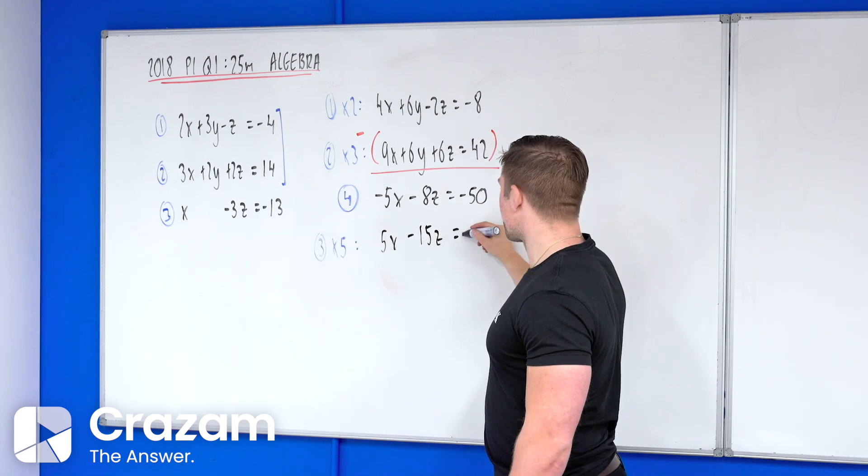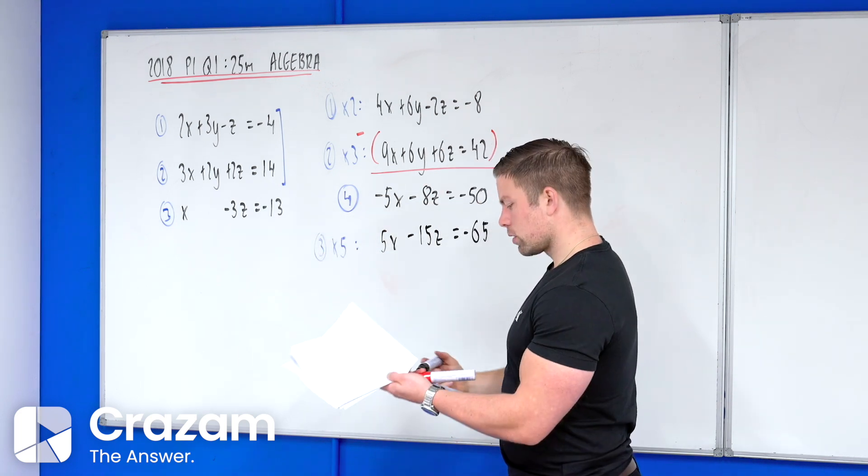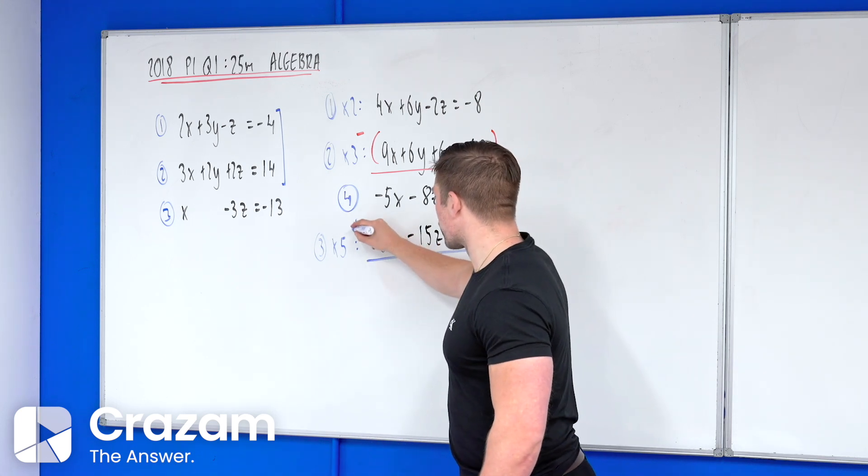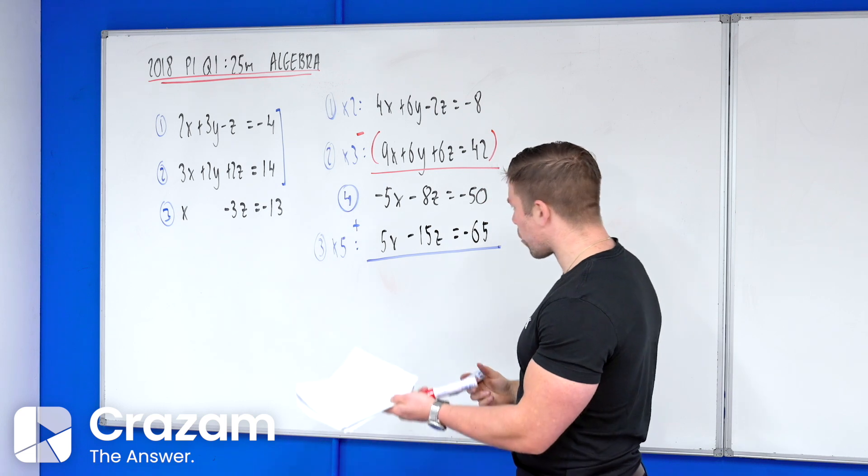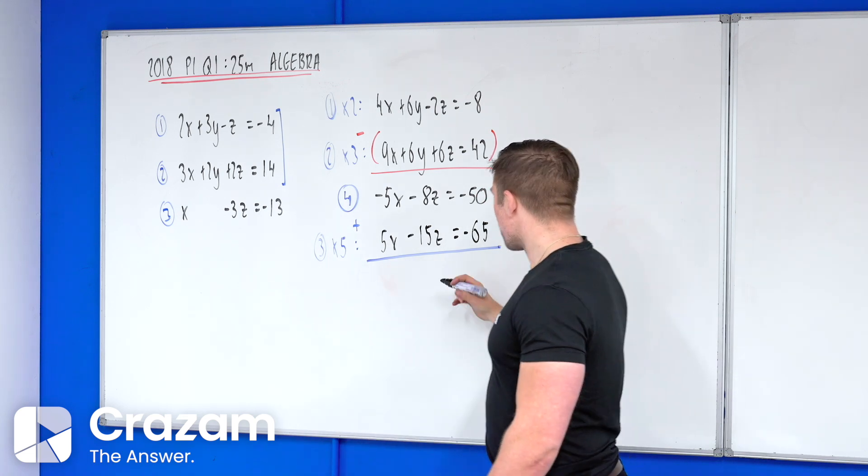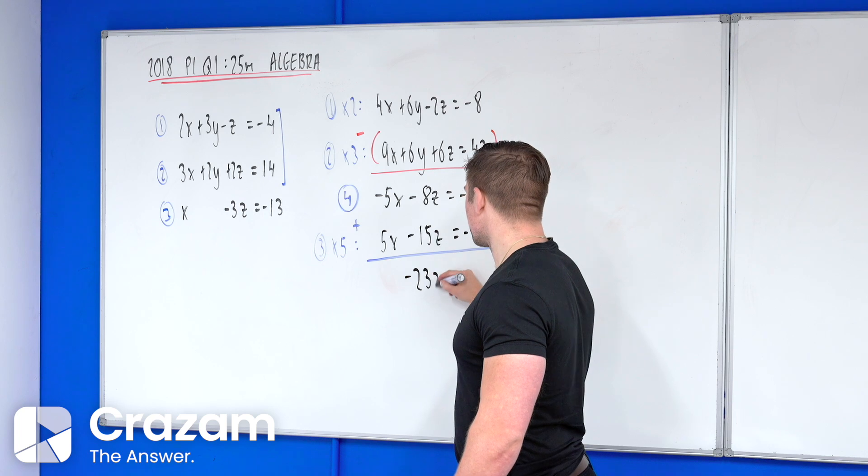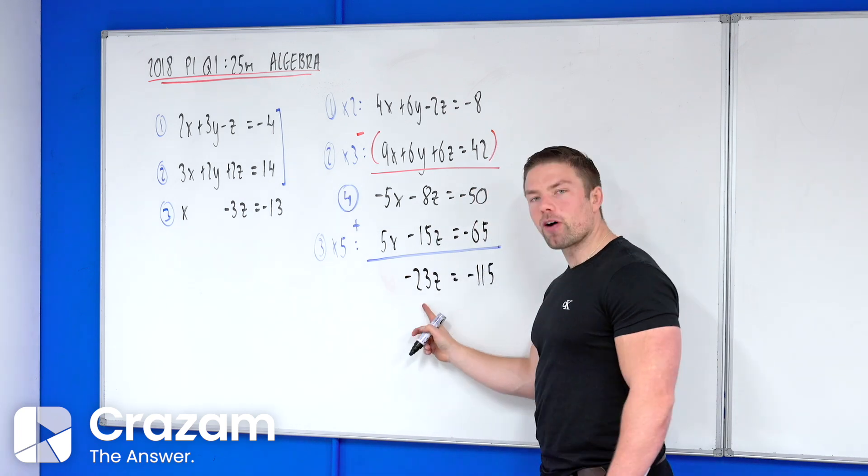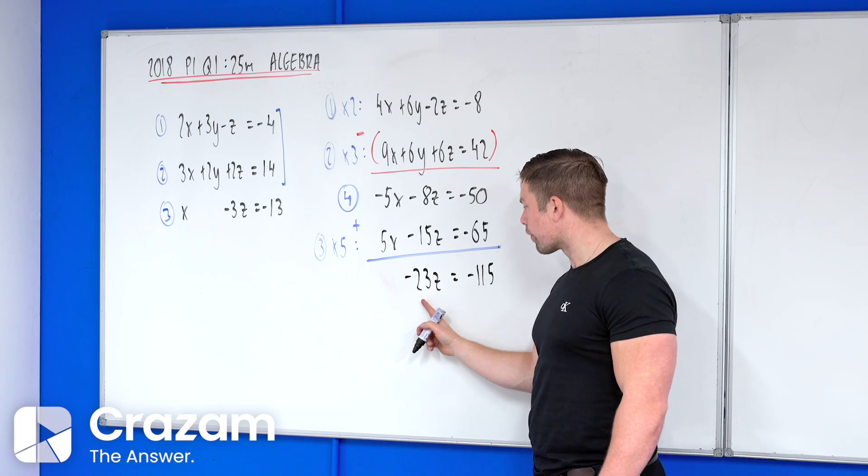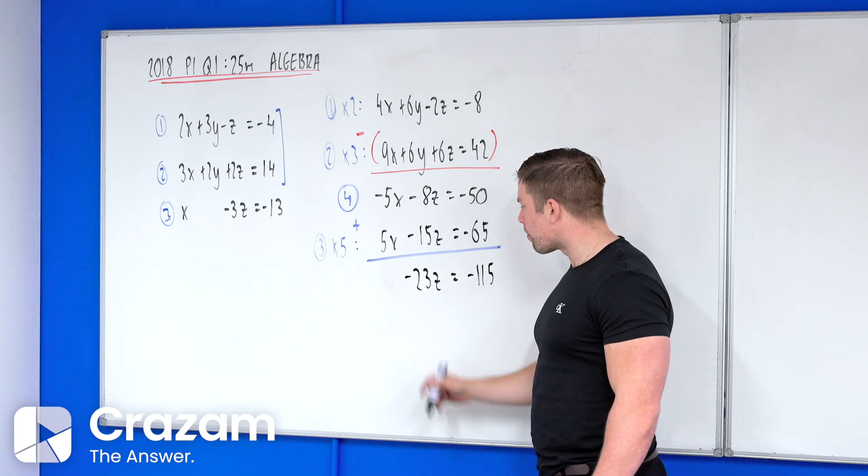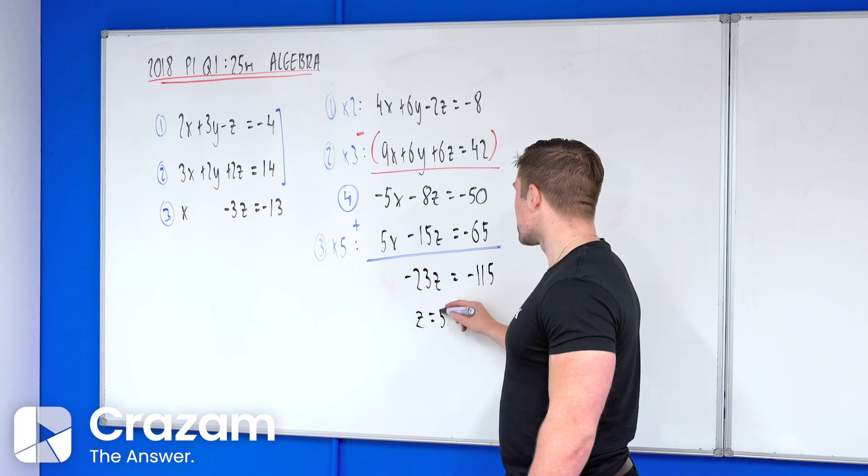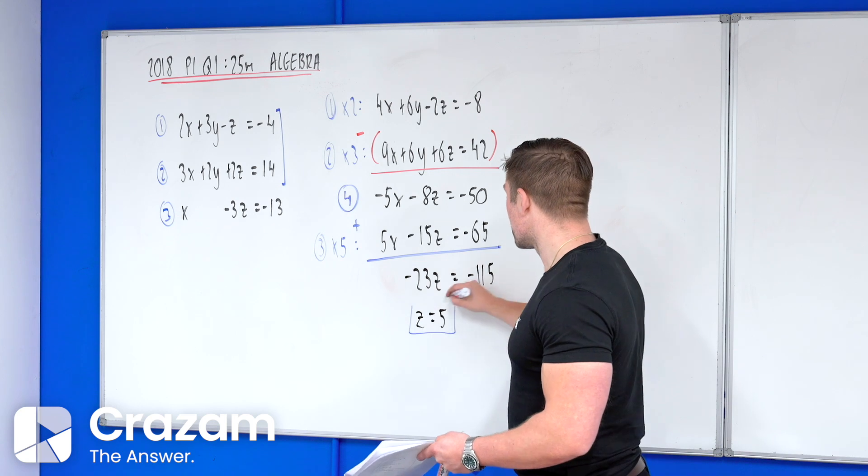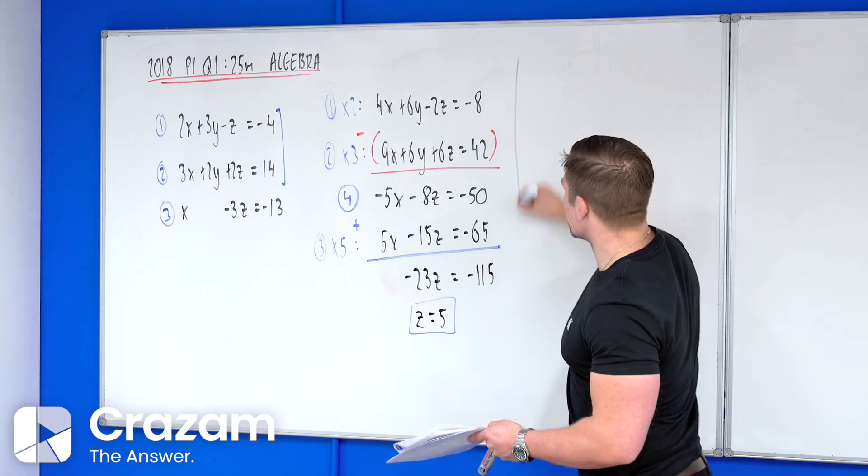equals to minus 65. If we now add these equations together because we want to get rid of the x's, if we add these equations together that will give me nothing minus 23z equals to minus 115. And divide across by the minus 23 and we get that z equals to 5.